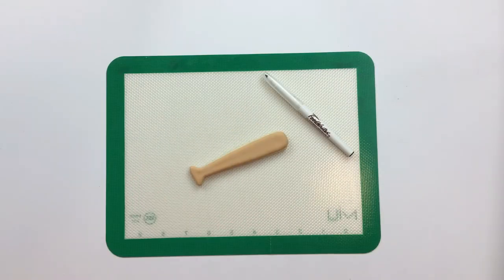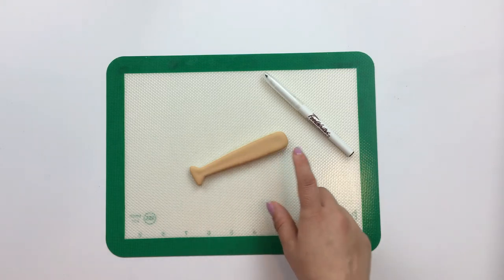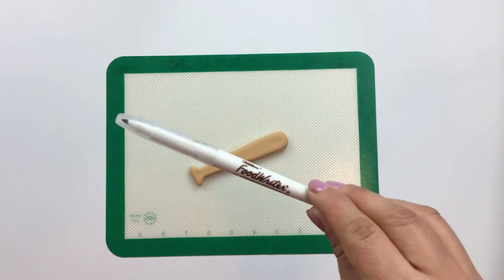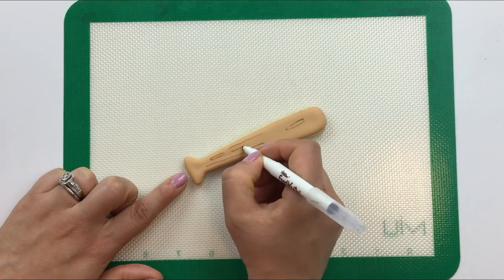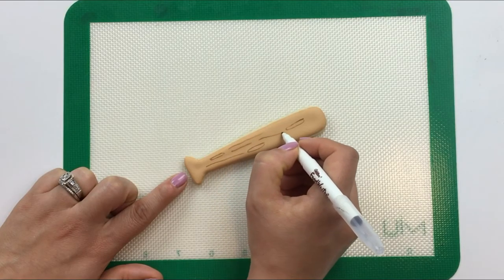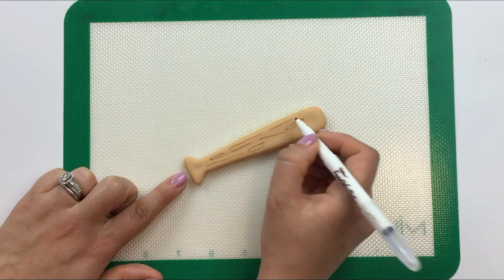For our baseball bat we're going to start by drawing in the grains of wood using a brown food coloring marker. There's no such thing as perfect with this technique as there is no two pieces of wood that are exactly alike.